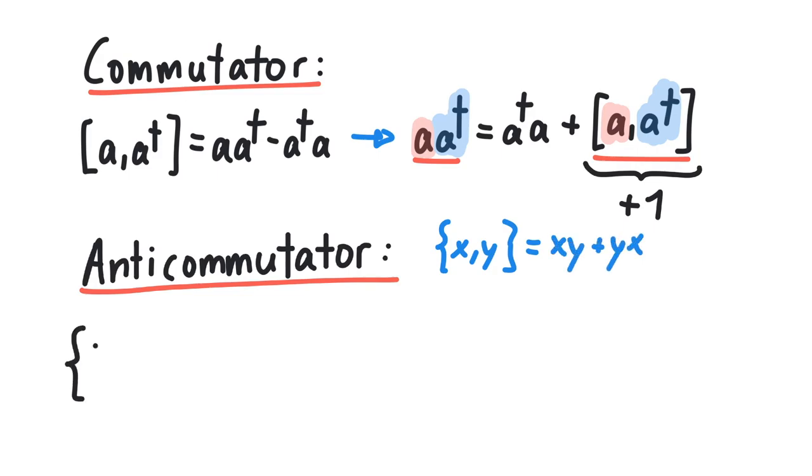Let's imagine we have two operators, b and b-dagger, which anti-commute. If two operators anti-commute, you get a minus sign every time you switch their places.